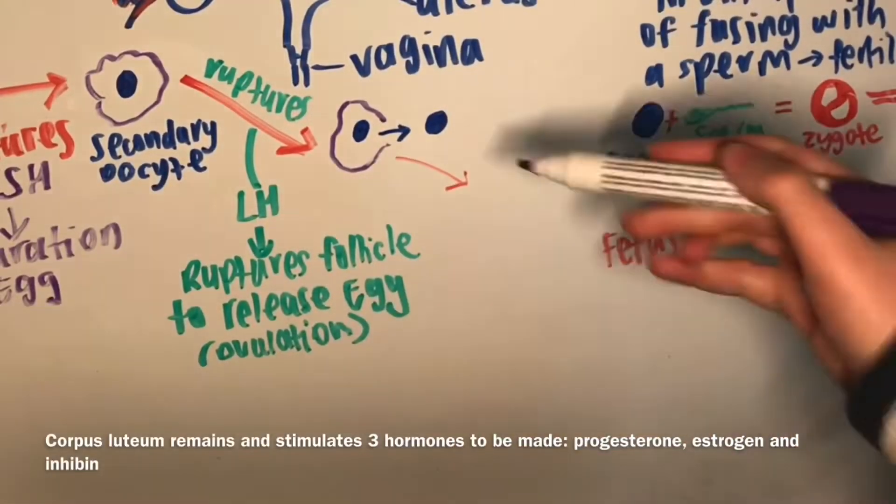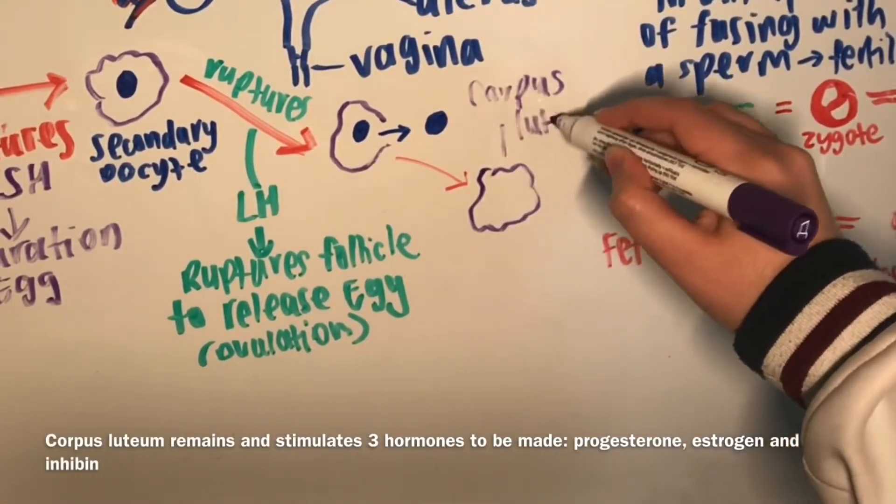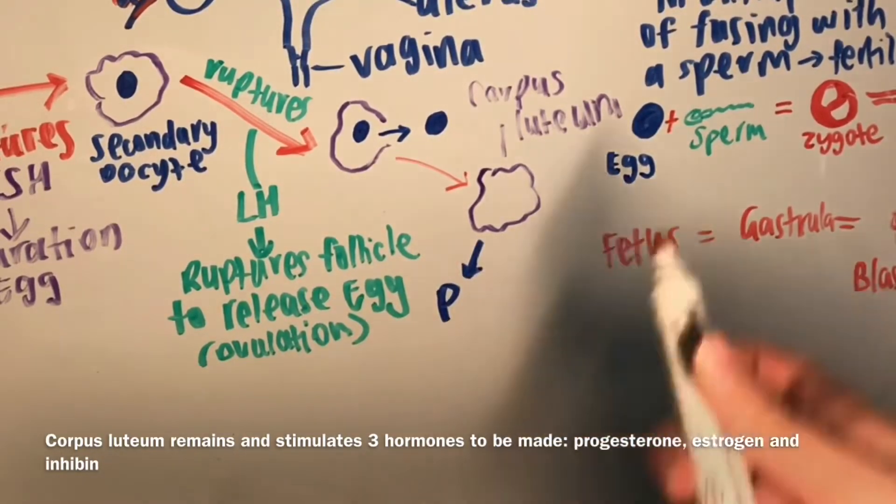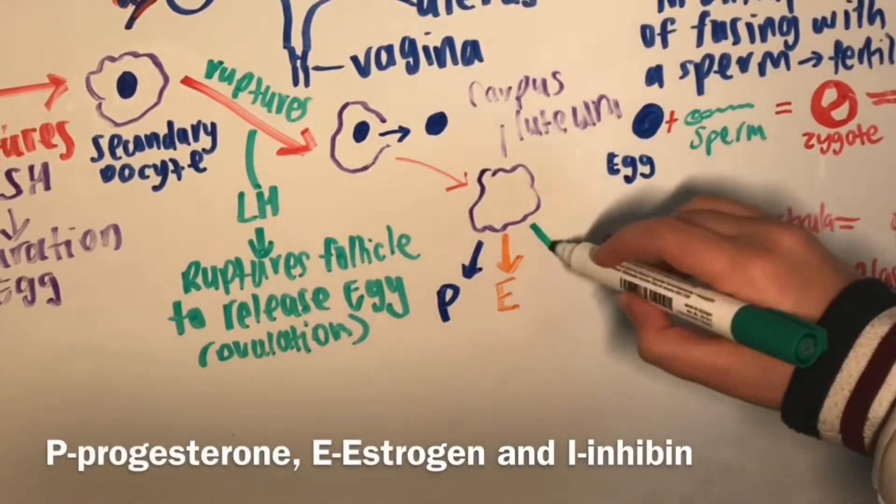This will leave behind the follicle without an egg called the corpus luteum. It stimulates three hormones to be released: progesterone, estrogen, and inhibin.